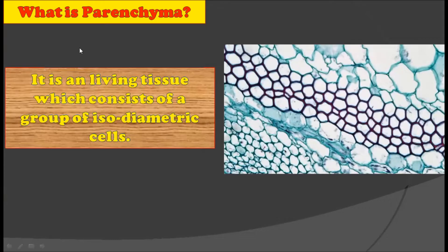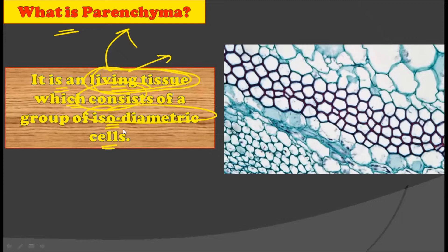First of all, what is parenchyma? It is a living tissue which consists of a group of isodiametric cells. The first thing you should know about parenchyma is that it is a living tissue. There are many comparative differences between parenchyma, sclerenchyma, and collenchyma. One of them is whether the tissue is living or dead. Parenchyma is a living tissue and it consists of a group of isodiametric cells, as you can observe in this picture.